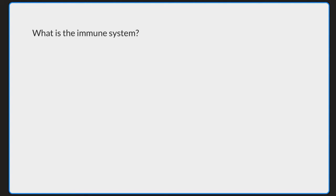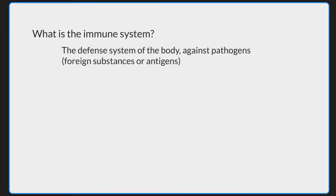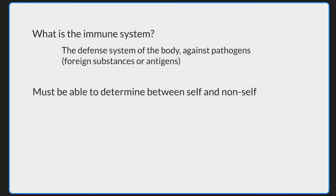What is the immune system? The immune system is a defense system that the body has in place in order to protect itself against pathogens that may enter into it. In order for it to function properly, the immune system must be able to detect a whole range of pathogens. Another important aspect is that it must be able to determine the difference between self-proteins and non-self-proteins.